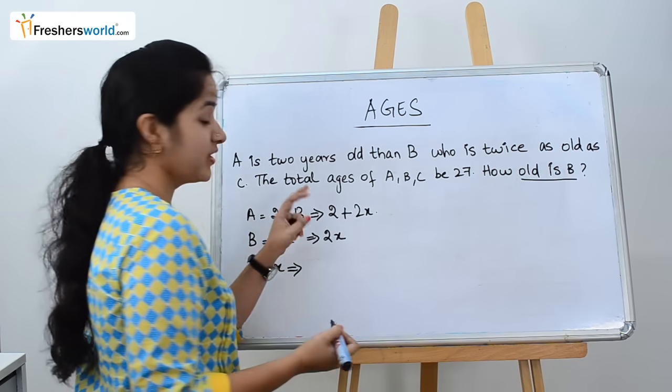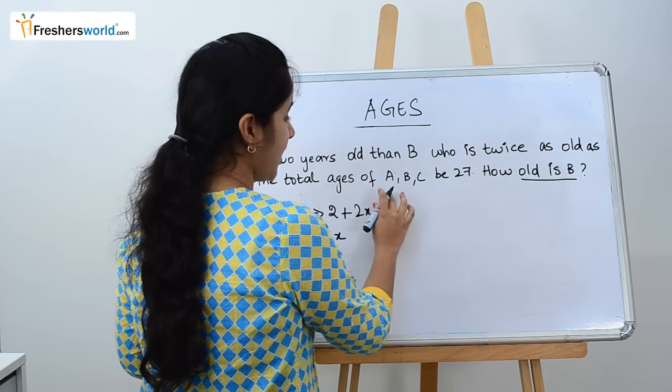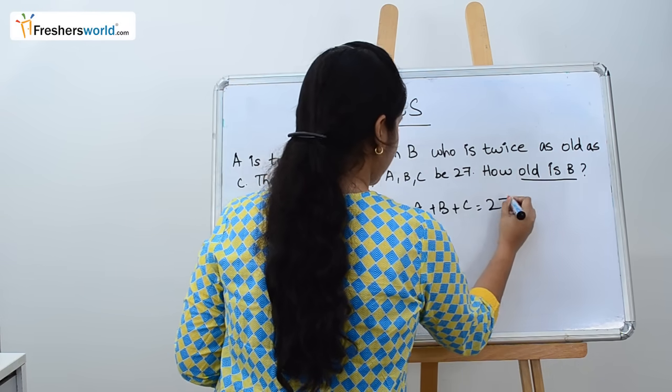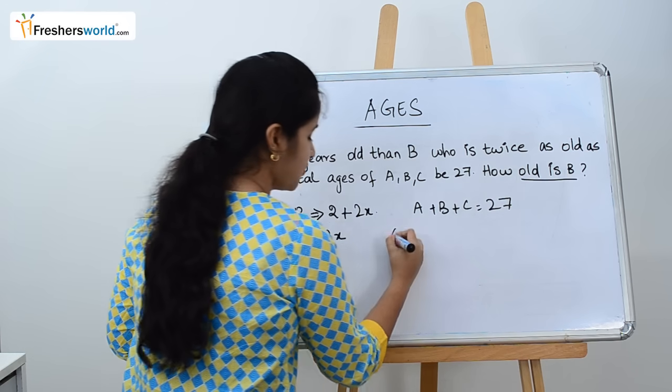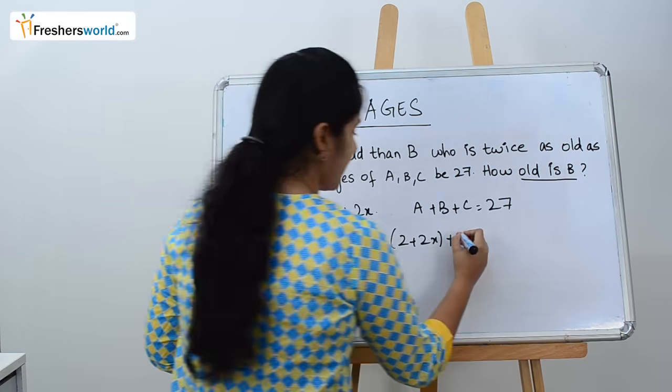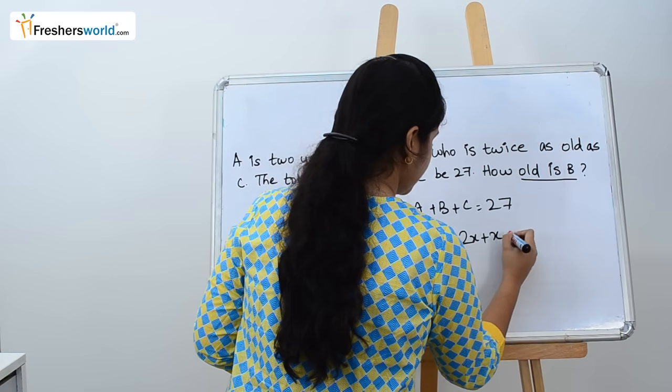What else have they given? Total number of ages is 27. So A plus B plus C equals 27. What is A? 2 plus 2X. What is B? 2X plus X equals 27.